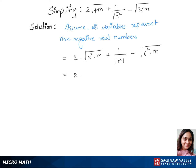Now we have 2 times, let's separate the square root between those, so that's root of 2 squared times root of m plus 1 over n minus root of 6 squared times root of m. We just separated the square root here.